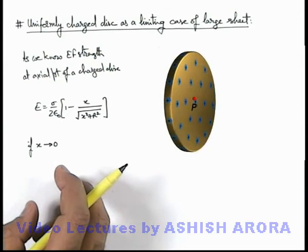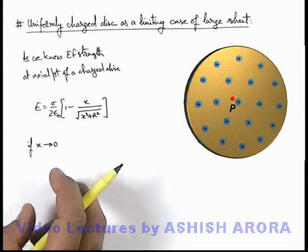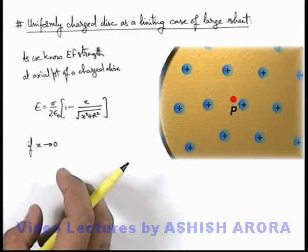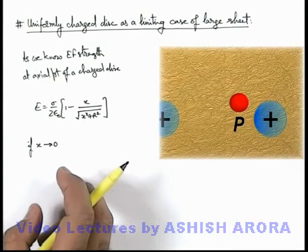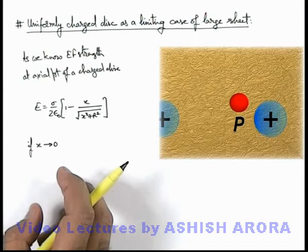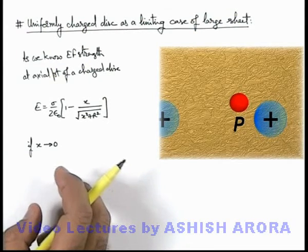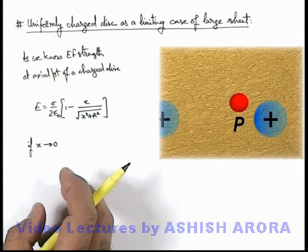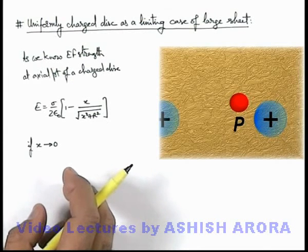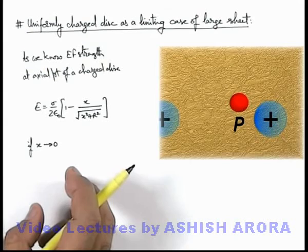So in this situation, if we just look at point P in a close preview, a zoom view, you can see at point P it'll behave like it is located in front of a very large sheet, because the distance of point P is negligible from the surface of this disc. So this disc will act like an infinite sheet at P.